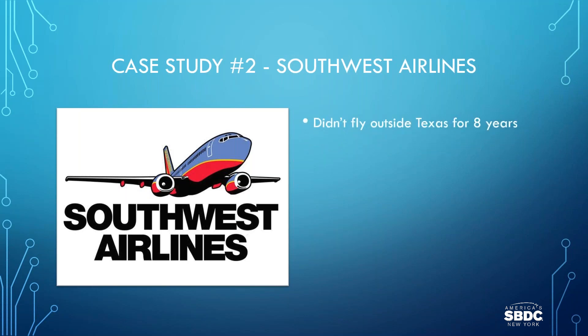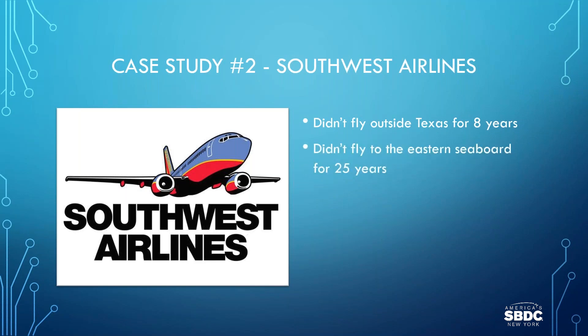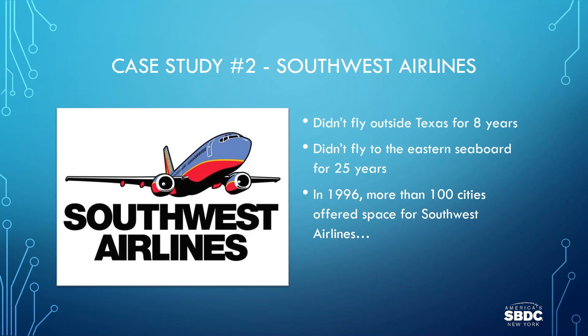Southwest didn't expand outside Texas until nearly eight years after starting service, making a small jump to New Orleans. Southwest moved outward from Texas in deliberate steps: Oklahoma City, Tulsa, Albuquerque, Phoenix, and Los Angeles, and didn't reach the eastern seaboard until almost a quarter of a century after its founding. In 1996, more than 100 cities clamored for Southwest service. How many cities did Southwest open that year? Four. I picked Southwest Airlines as a model for how a fledgling company chose a target market and grew by consistently focusing on that target.